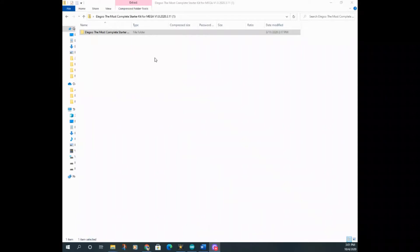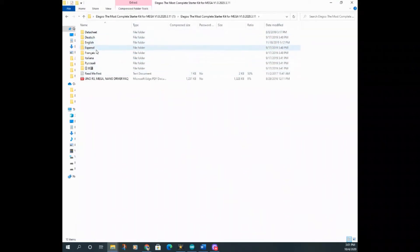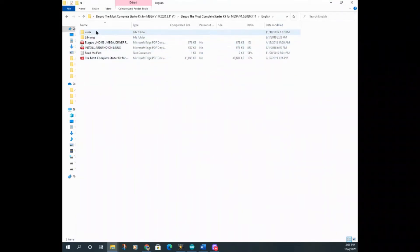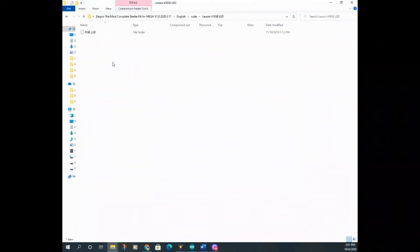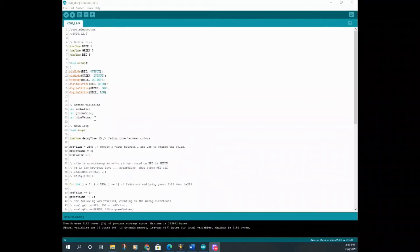Next thing you want to do is open up your folder. Go to Elegoo, the most complete starter kit file. Go to English unless you speak another language. Go to code. Go to lesson four. And then you can open it up from right here.